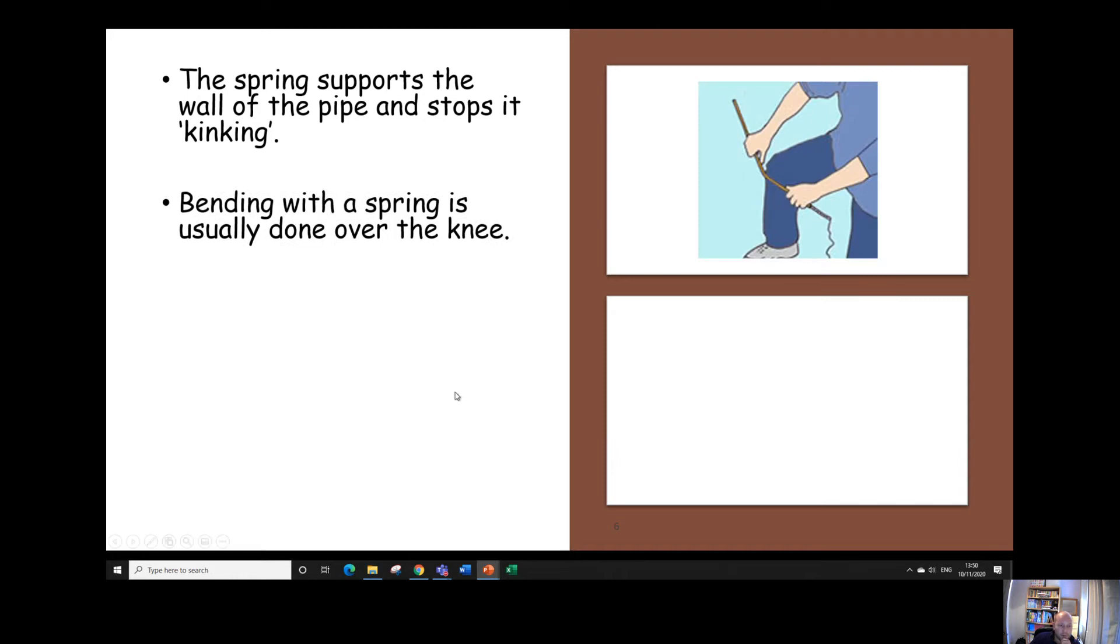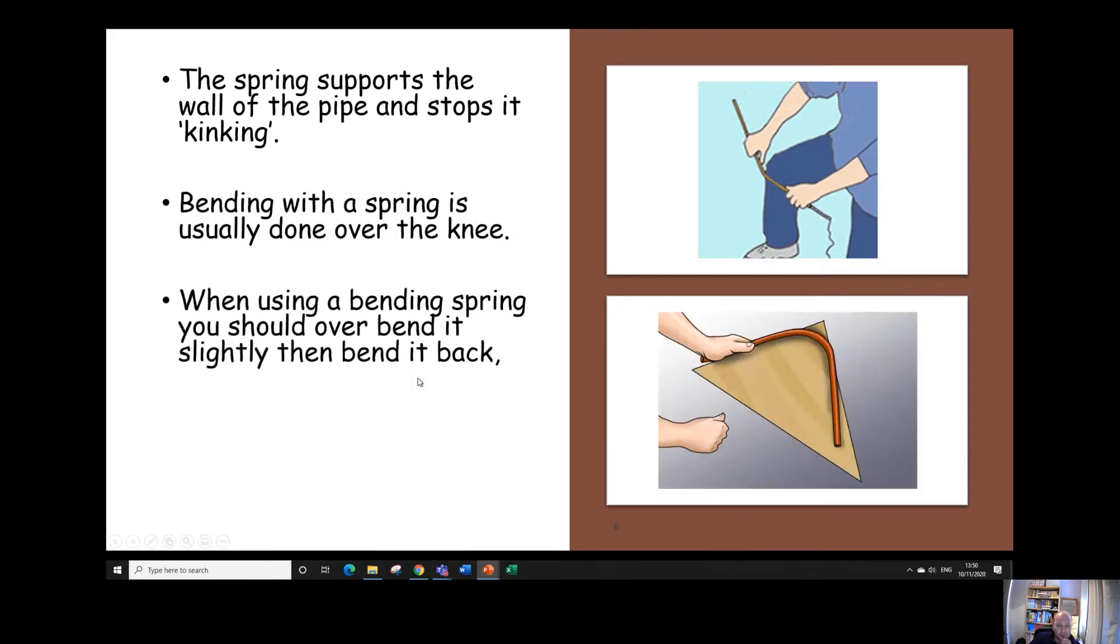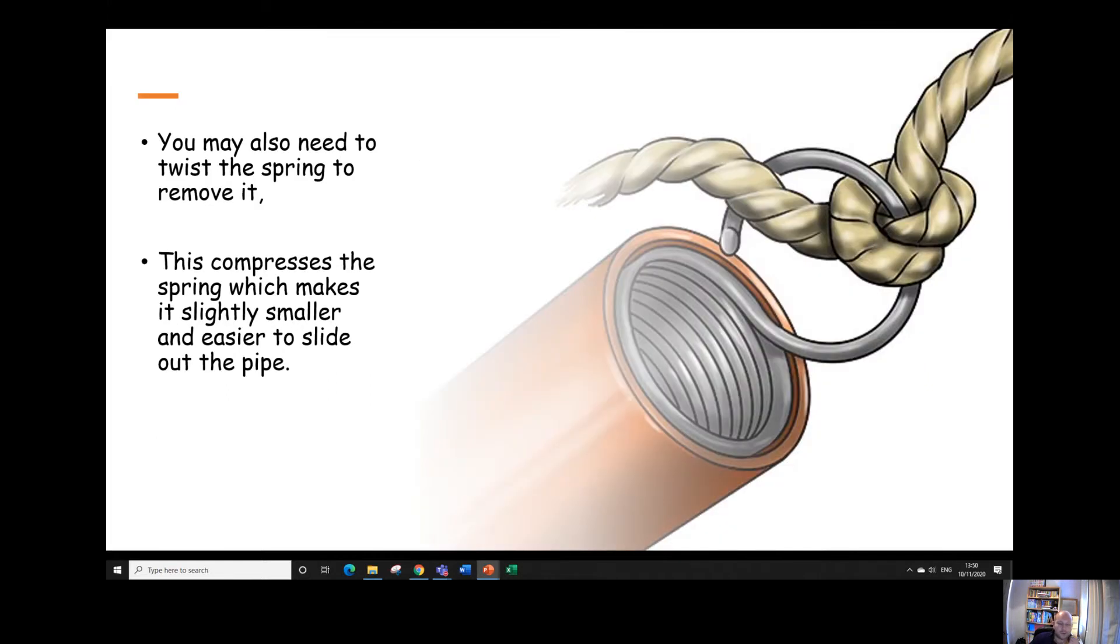We normally bend this with a spring over our knee and the trick is always make sure that you overbend it slightly and then bend it back and that opens the throat of the bend which makes it easier to take the spring out. Another useful trick to get the spring out is sometimes coil it up, twist the spring causes it to coil up, get it thinner and longer and then you can pull it out.